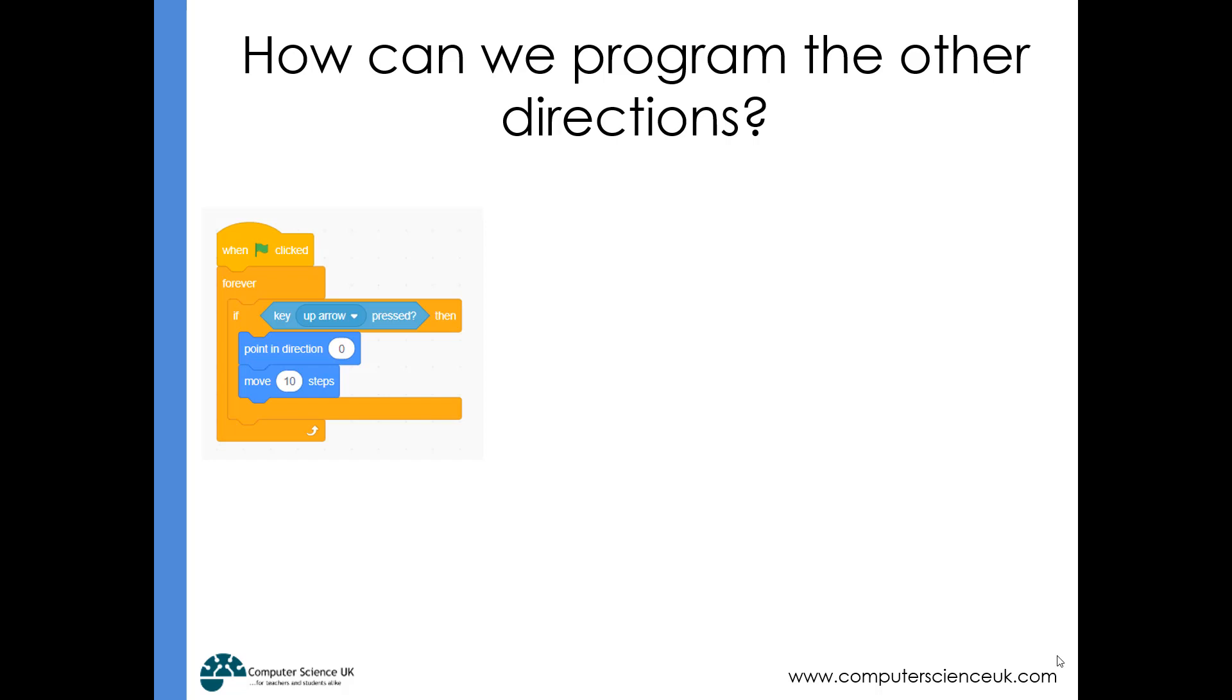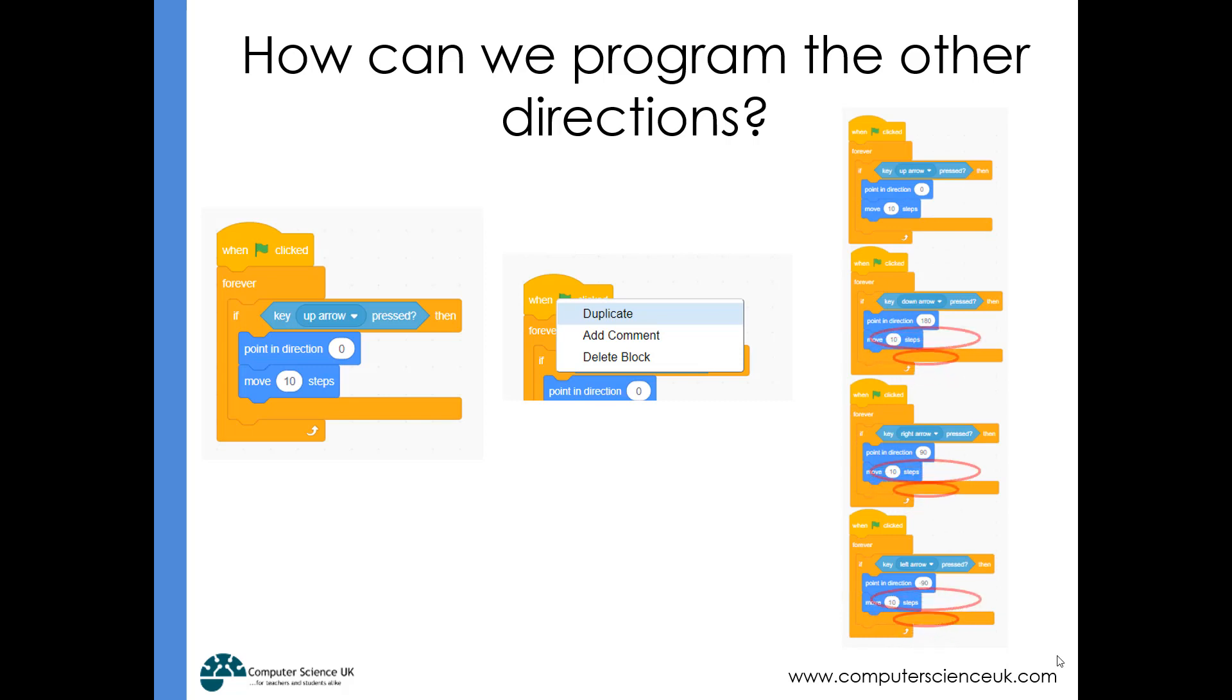Now we've got one direction working. Let's see how we could make a tweak so all the different directions work. It's simple—we just right-click on the 'when green flag clicked' block and choose duplicate. That creates an exact copy of the code. If we do that four times, we can make very small changes. On the second one, when the down arrow key is pressed, we make it point downwards at direction 180. On the third script, program it to move right, and on the fourth, move left.